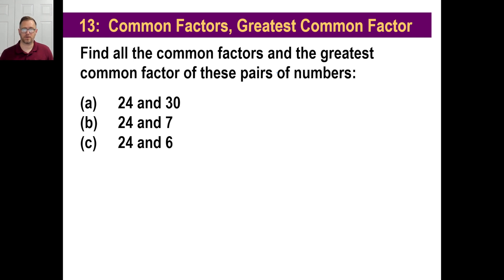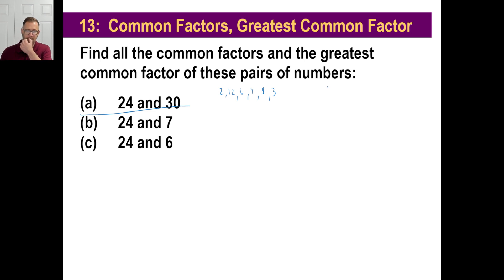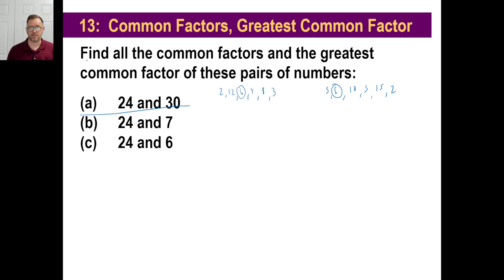Find all the common factors and the greatest common factor of these pairs of numbers. Let's have all the factors of 24. We got 2 times 12, 6 times 4, how about 8 and 3? For 30, we got 5 and 6, 10 and 3, and 15 and 2 as well. Which one is the greatest common factor? Looks like it's 6. 6 is the greatest one that goes in — the one that goes into both of those. 6 is the biggest.